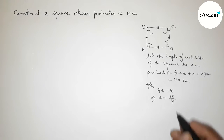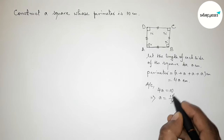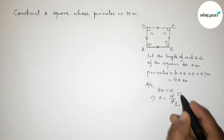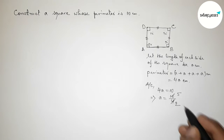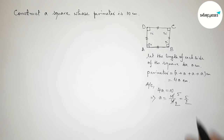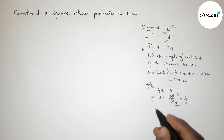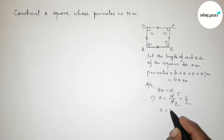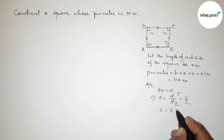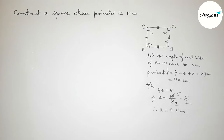Dividing both numbers by 2, we get 5 over 2, so a equals 2.5 centimeters. Therefore each side of the square is 2.5 centimeters.